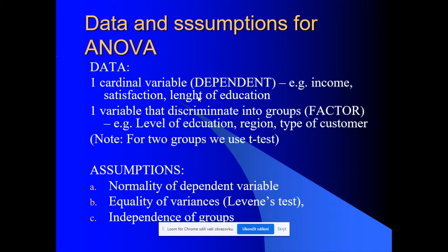Now let's discuss the assumptions and data requirements for analysis of variance. We need one cardinal variable — the dependent variable — such as income, life satisfaction, or length of education. Means can only be computed for cardinal variables. We also need a second variable dividing our data into groups, usually called a factor. For two groups, we would apply the two independent sample t-test instead.